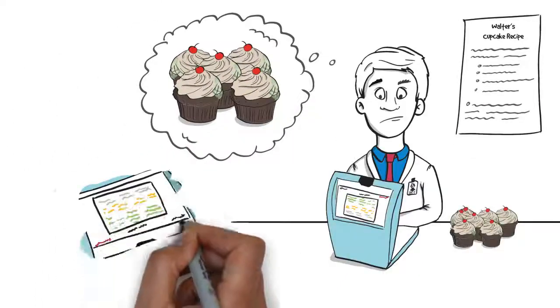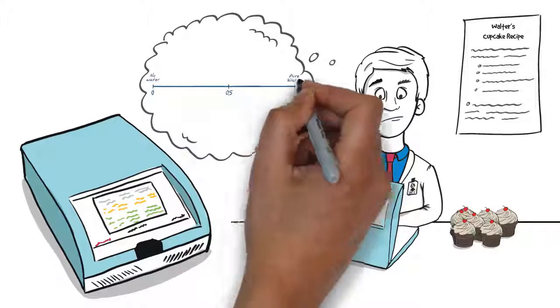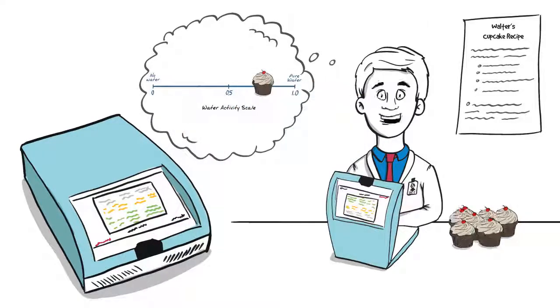If Walter had a Novasina water activity meter, he would have known that the water activity level in his cupcake is too high and he could adjust his recipe to avoid spoilage.